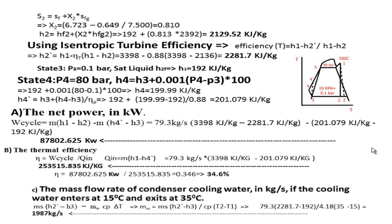Finally, to find the mass flow rate of cooling water that we have to use to cool the steam down and condense it, we should use the heat balance equation. The amount of heat that leaves from the steam to the water is taken by the water to change its temperature from 15 to 35. Using this heat balance, the mass flow rate of cooling water will be calculated as 1987 kilograms per second.